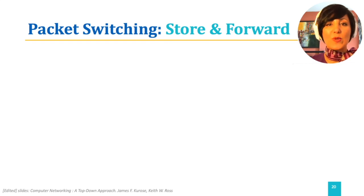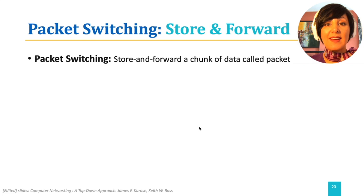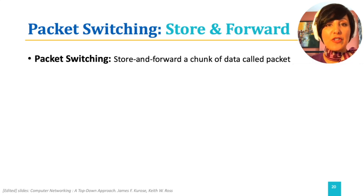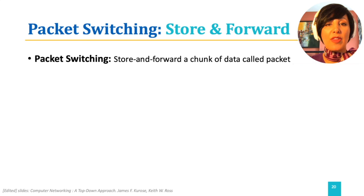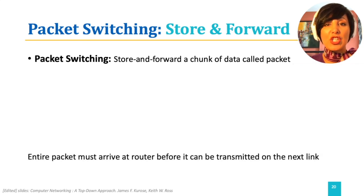In packet switching, on the other hand, there is no resource reservation along the path. Packet switching is usually done by store-and-forward transmission. A packet, in simple words, is a package of information resulting from segmenting data represented in bits of 0s and 1s and adding a few fields called a header to specify the details of the packet. The packet switch receives the entire packet on its incoming link, then places the entire packet on its outgoing link.